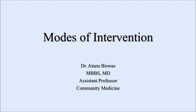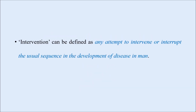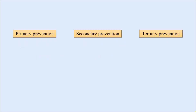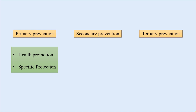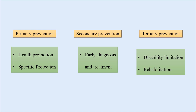In our previous video, we learned about the different levels of prevention. There are four levels of prevention: primordial, primary, secondary, and tertiary. Today we shall learn about the different modes of intervention for each level of prevention. Intervention can be defined as any attempt to intervene or interrupt the usual sequence in the development of disease in a person. In primary prevention, the modes of intervention include health promotion and specific protection. In secondary prevention, we have early diagnosis and treatment, whereas in tertiary prevention we have disability limitation and rehabilitation.